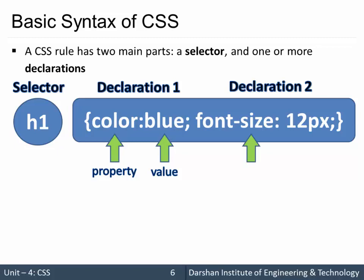In declaration 2, the property is font-size and its value is 12px. So we have selector h1, declaration 1 sets color to blue, and declaration 2 sets font-size to 12px. Multiple declarations are separated using a semicolon. A common mistake students make is writing an equals sign — remember, property and value are separated by a colon, and two declarations are separated by a semicolon.